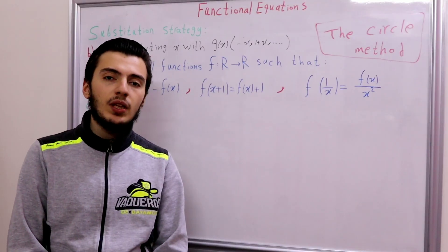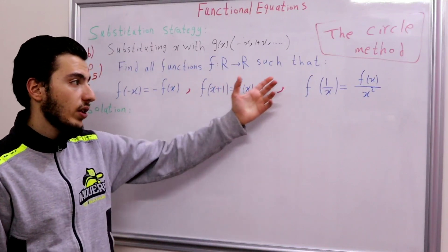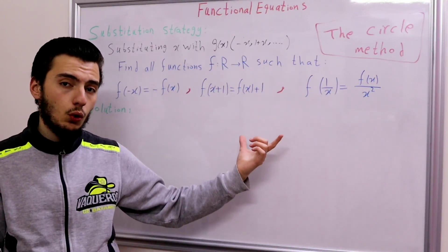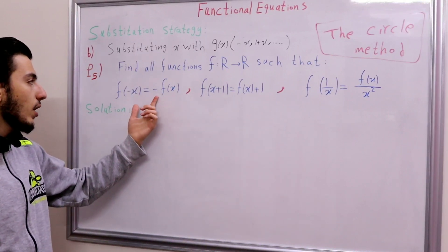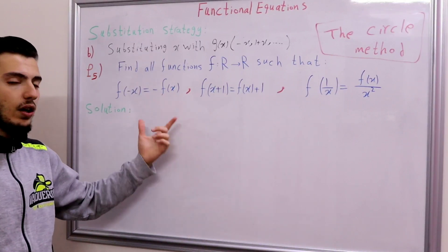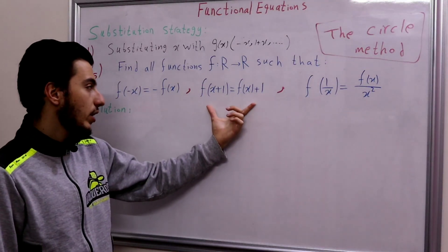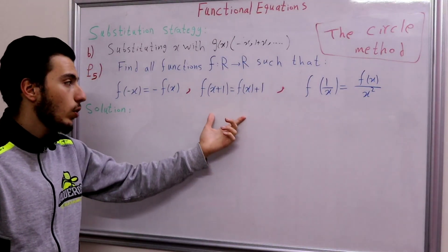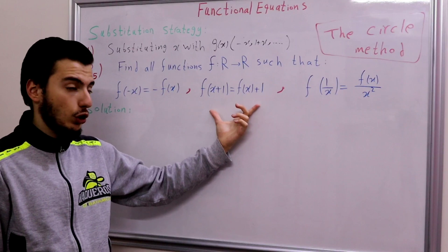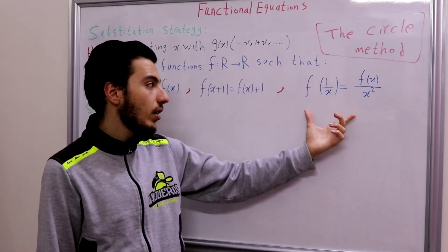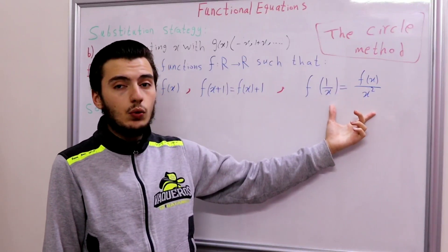In this problem, we're asked to find all functions f from ℝ to ℝ such that the following three functional equations hold. The first is f(-x) = -f(x), meaning f is an odd function. The second is f(x+1) = f(x) + 1, which is a really beautiful equation. And the third is f(1/x) = f(x)/x².